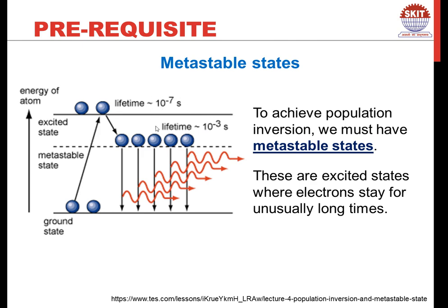If we want to achieve population inversion, we have to increase these metastable states, because in those states we would have many atoms in a higher energy state for a longer duration, and these are basically required for laser action.